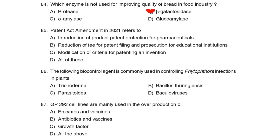83rd Question: Which enzyme is not used for improving quality of bread in the food industry? Correct Answer: Option B: Beta-galactosidase. 85th Question: Patent Act Amendment in 2021 referred to Correct Answer: Option B: Reduction of fee for patent filing and prosecution for educational institutions.